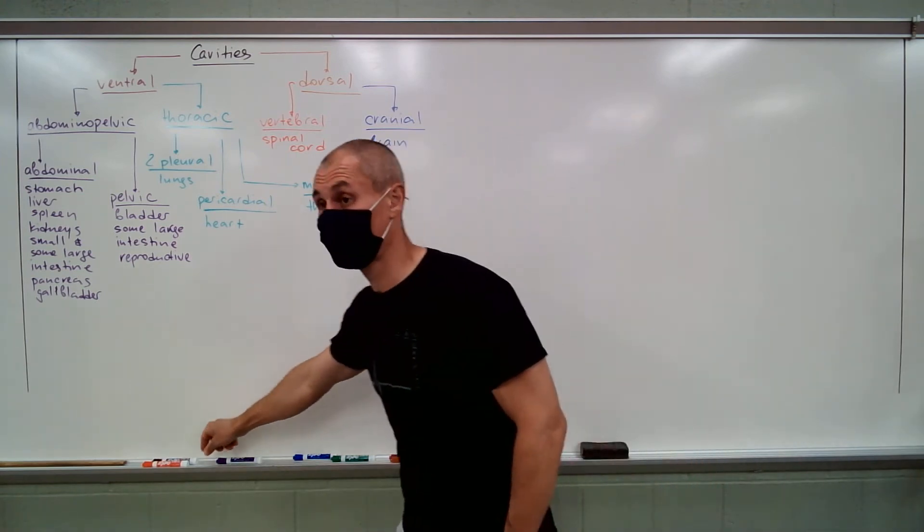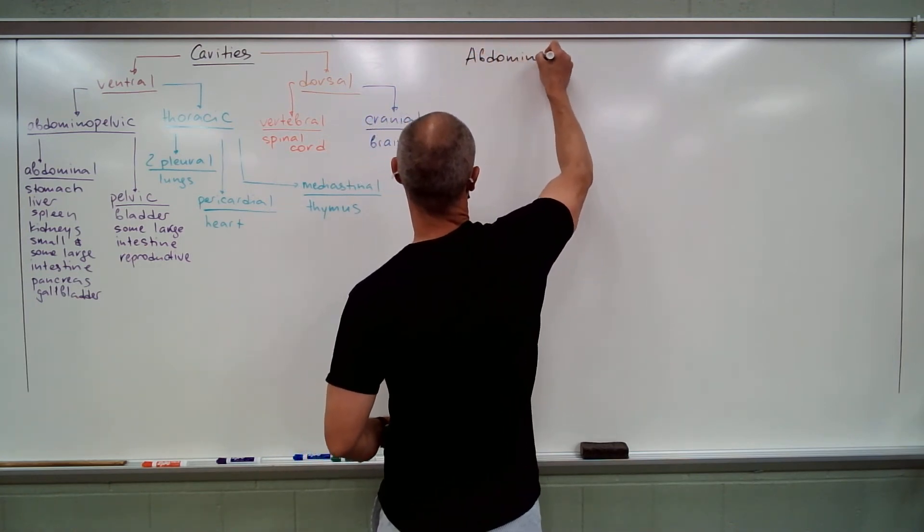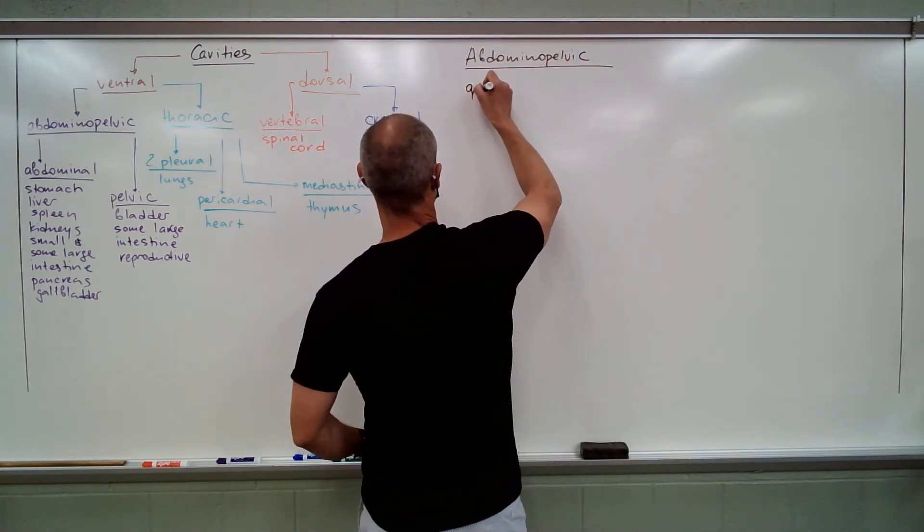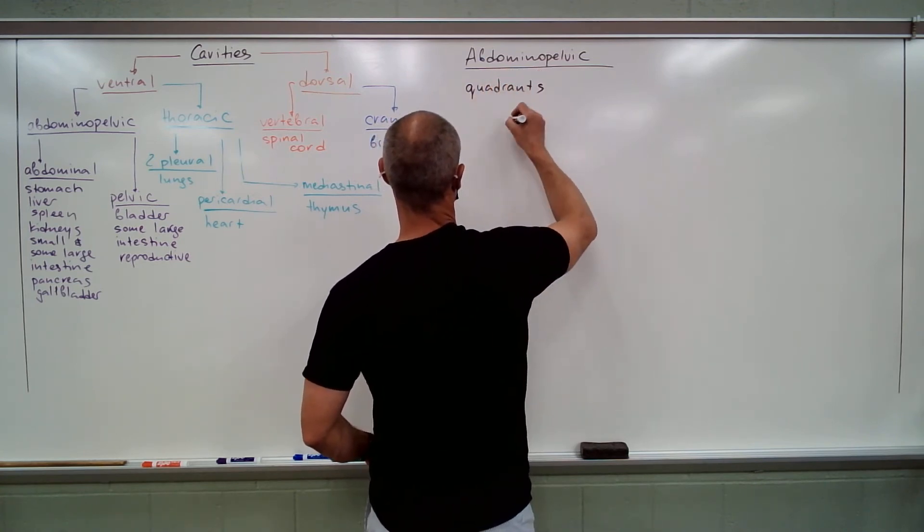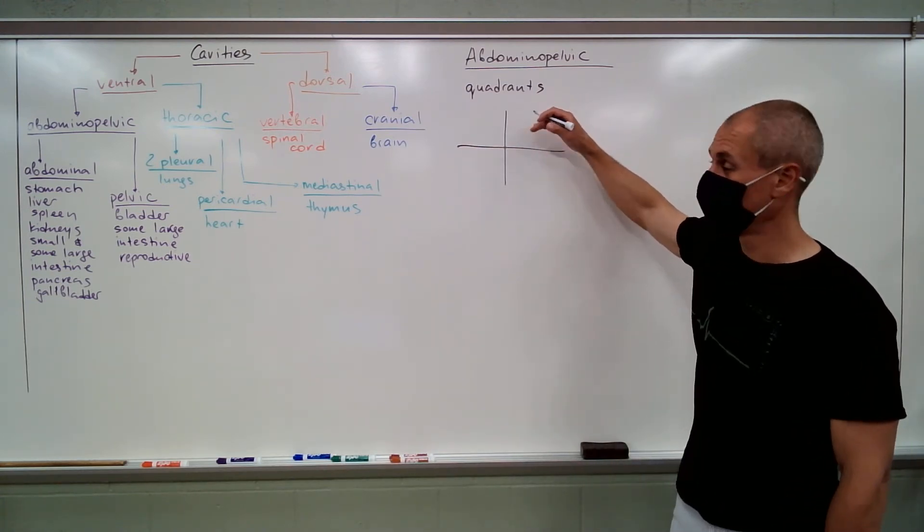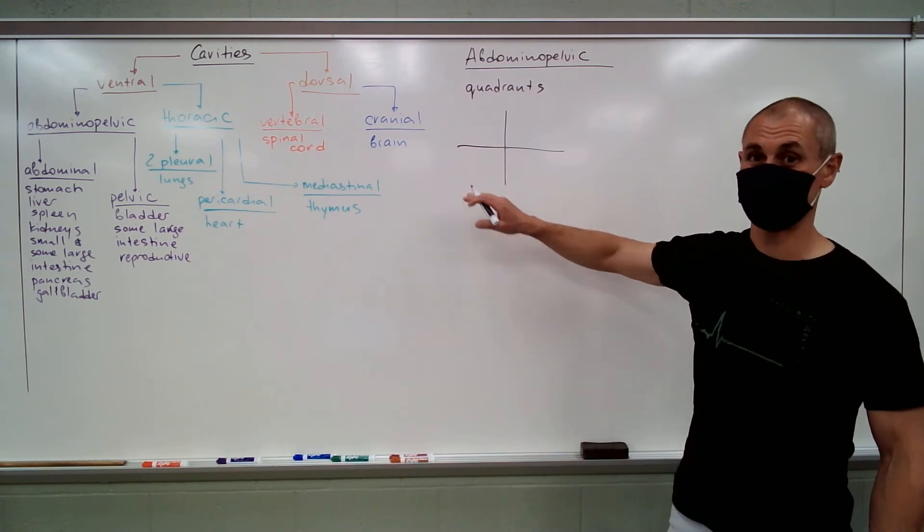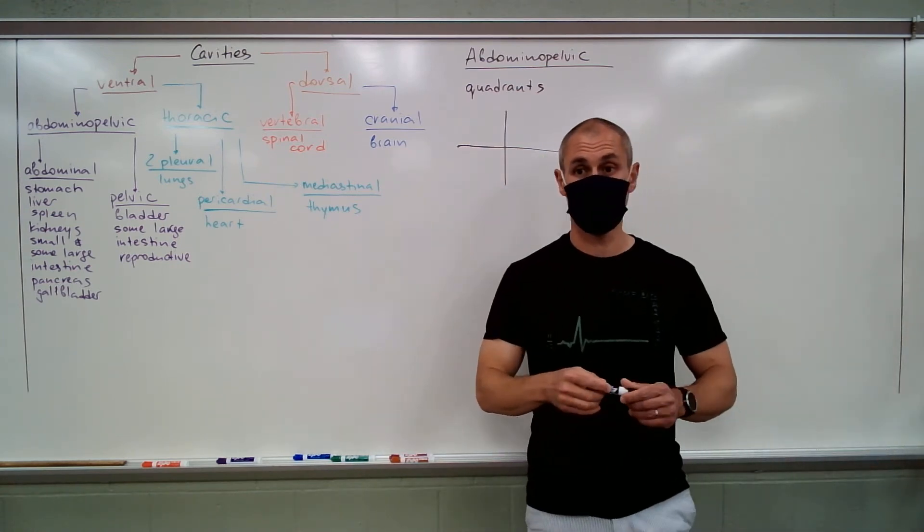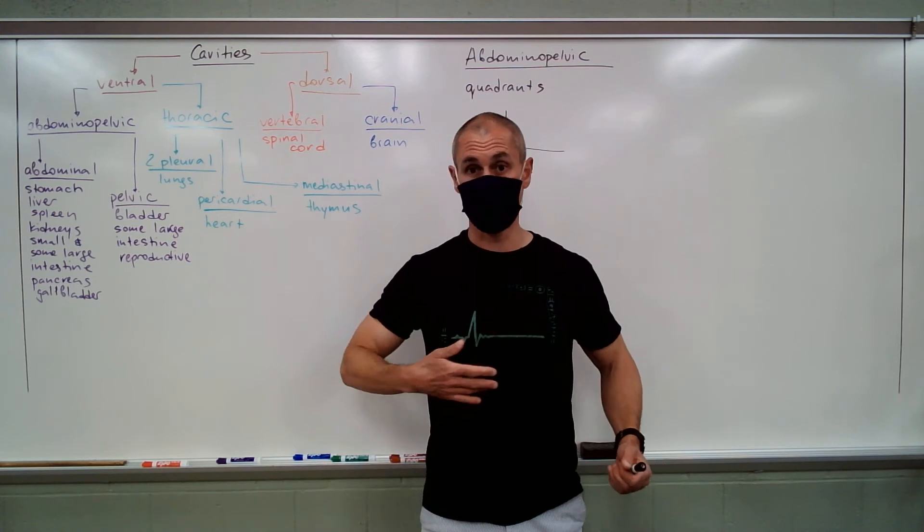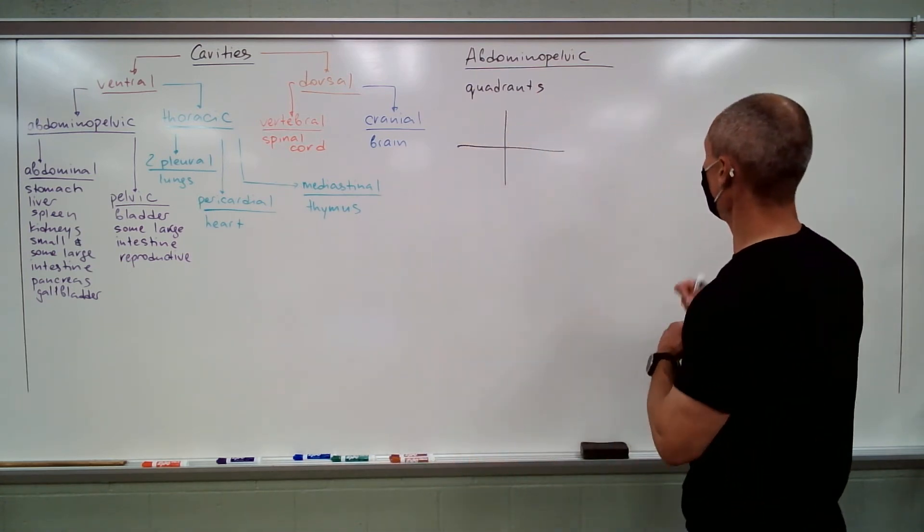Regions, abdominal pelvic regions, and quadrants. Left upper, left lower, right upper, right lower. Not a rocket science. Why do we care? If you have a patient who complains about the pain, or there's a wound, something going on, your abdominal pelvic region is huge. So, you want to partition it.